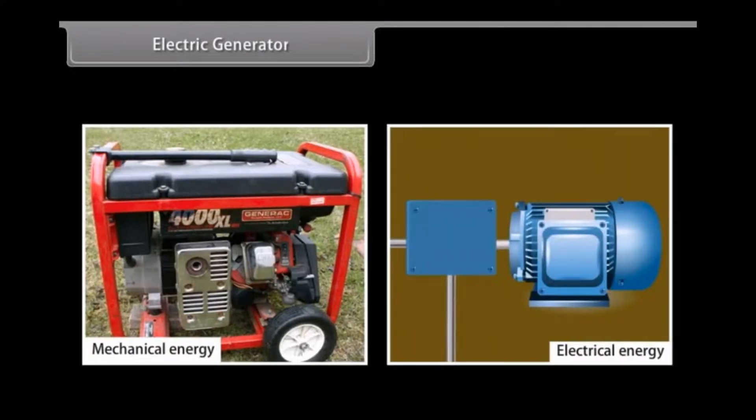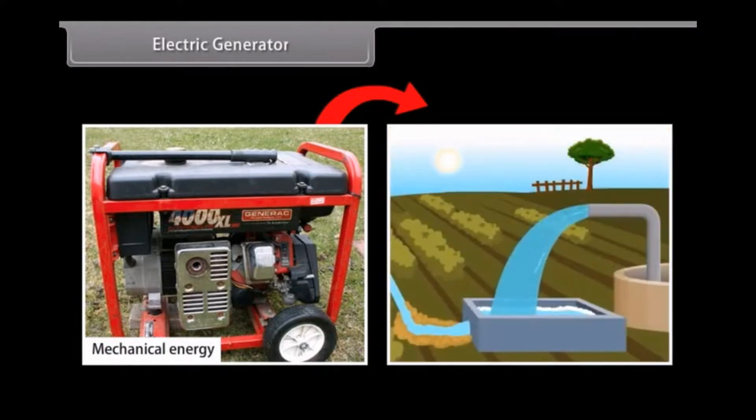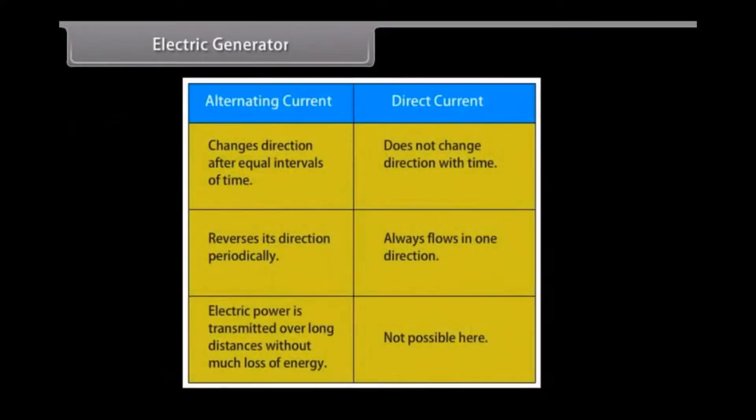Electric Generator. An electric generator converts mechanical energy to electrical energy. It forces electrical charge to flow through an external electrical circuit. Examples include a water pump, which causes water to flow, but do not create water. Electric generators operate based on electromagnetic induction, that is, whenever a conductor moves to a magnetic field, a current is induced in this conductor. If a magnet is spinning inside a coil, alternating current is induced in the coil. Alternating current changes direction after equal intervals of time. The other type of current is direct current, which does not change direction with time.